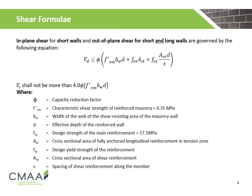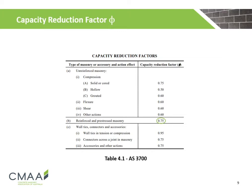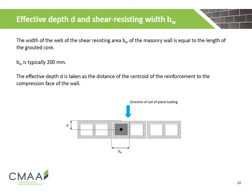The out-of-plane shear capacity of the reinforced masonry wall is taken as the sum of the masonry component, dowel action of the main longitudinal steel, and any shear reinforcement. The design shear capacity shall not exceed 4 times the factored capacity of the masonry component. The capacity reduction factor phi for reinforced masonry is 0.75, found in table 4.1 of AS3700. The width of the web Bw is equal to the length of the grouted core, typically taken as 200 mm. The effective depth D is taken as the distance from the centroid of the reinforcement to the compression face of the wall.